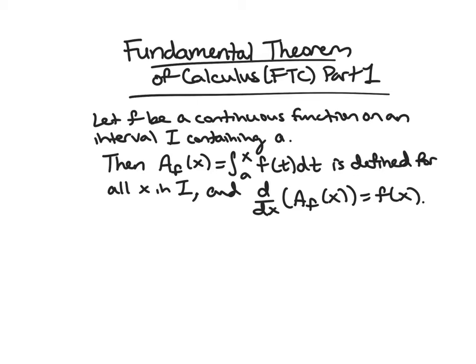Now we're ready for the Fundamental Theorem of Calculus — an important theorem, abbreviated FTC — which has two parts. Part 2 comes next time. Part 1 is about the area function: if f is continuous on an interval I containing the point a, then the area function gives an actual value for any x in that interval, and as we've seen, the derivative of the area function is the function you started with — the area function is an antiderivative of little f.